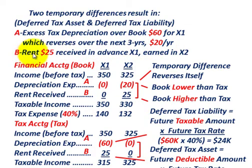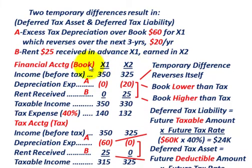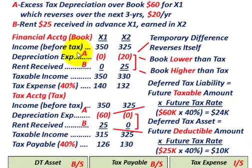Secondly, we're going to have rent of $25,000 received in advance in year X1, but it's going to be earned in year X2. So what we have to do is deal with the deferred tax asset and a deferred tax liability.